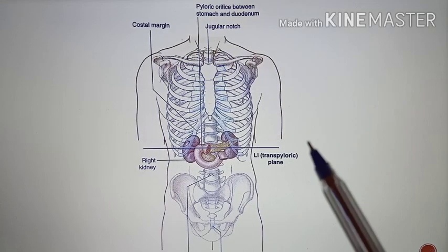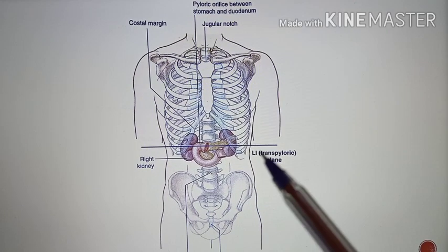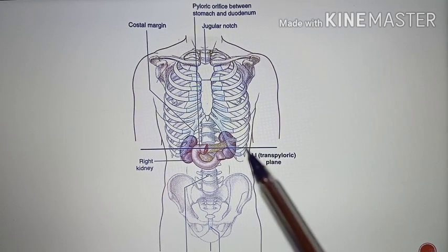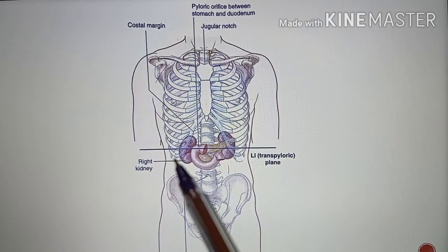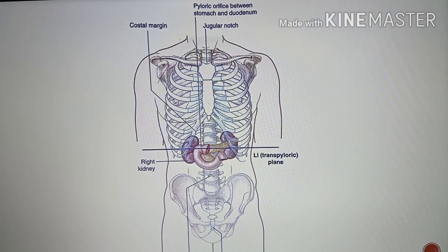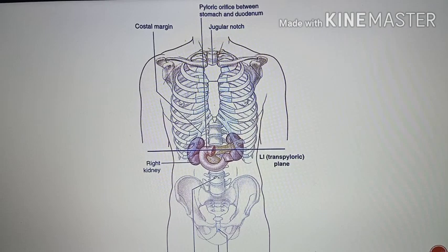The horizontal planes are the superior horizontal plane and the inferior horizontal plane. The vertical planes are right and left vertical planes. Coming to the superior horizontal plane, it is also called the transpyloric plane of Addison — A-D-D-I-S-O-N.